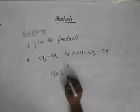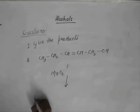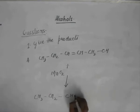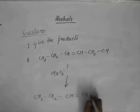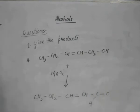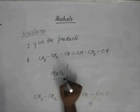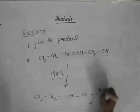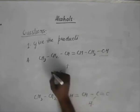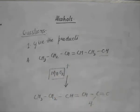The first question was CH3-CH2-CH double bond CH-CH2-OH plus MnO2. MnO2 being a very mild oxidizing agent, it oxidizes this alcoholic part to its corresponding aldehyde. We get CH3-CH2-CH double bond CH-CH2-CHO. When we use MnO2 with an alcohol, we get a corresponding higher oxidation product, that is the aldehyde. It cannot go to carboxylic acid because it is a very mild oxidizing agent.